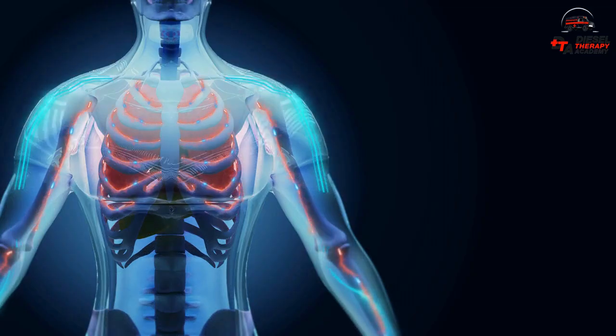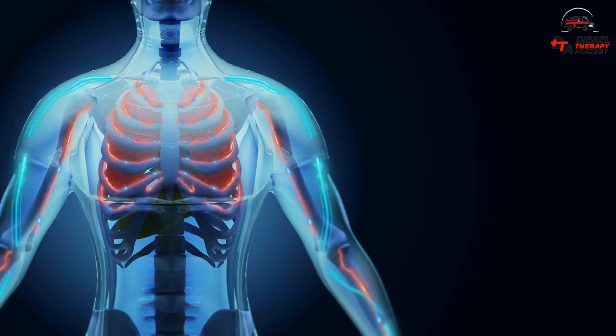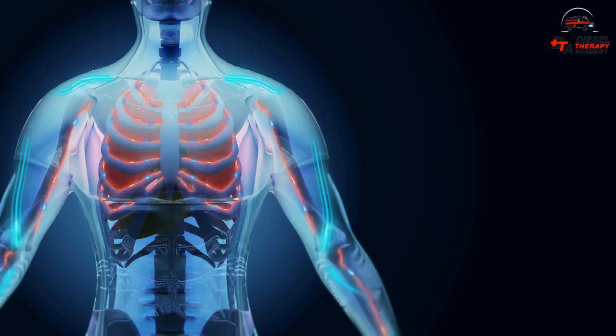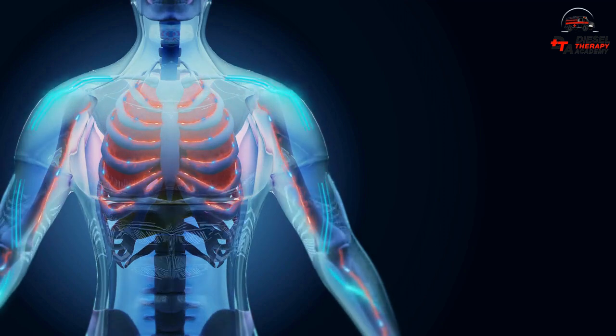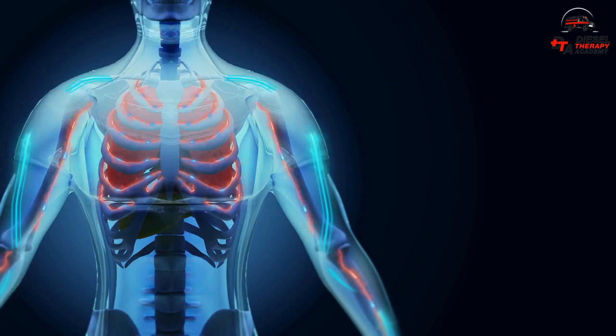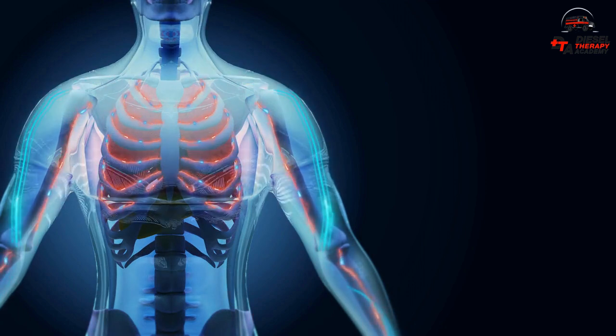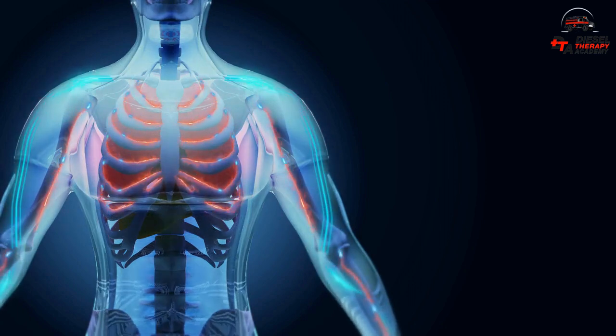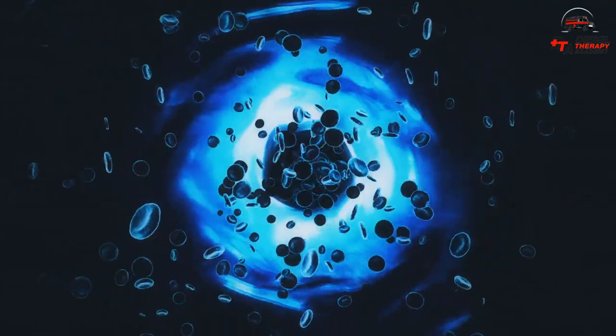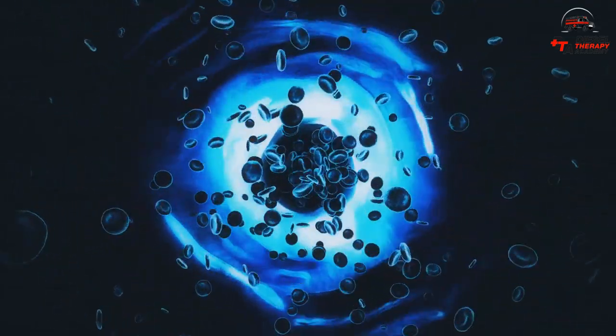Breathing is a complex process that relies heavily on the coordinated action of the muscles of respiration and the control center in the brain. The primary function of the lungs is to facilitate gas exchange between inspired air and the circulatory system. It helps bring oxygen to the blood and remove carbon dioxide from the body.